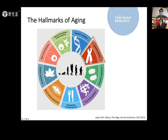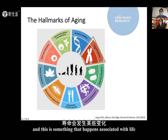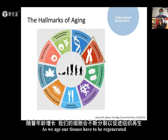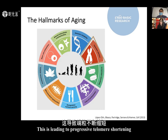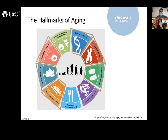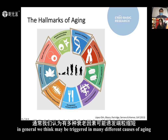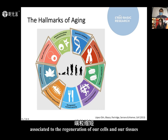We think telomere shortening is a primary cause of aging because when telomeres are eroded — something that happens associated with life — as we age our tissues have to be regenerated, leading to progressive telomere shortening associated with cell division and regeneration. This telomere shortening will lead to other causes of aging like genomic instability, stem cell exhaustion, cellular senescence, and mitochondrial dysfunction. We think it may be triggering many different causes of aging, making it a primary event.